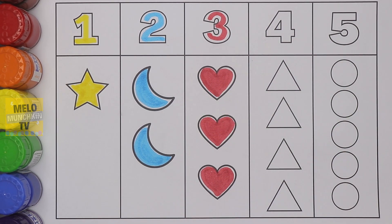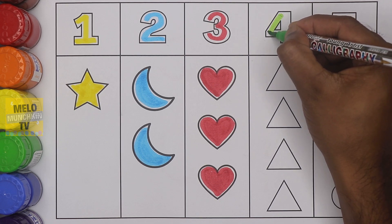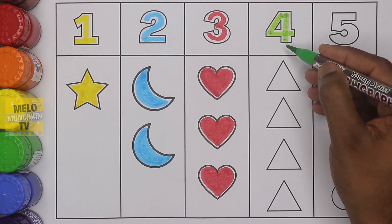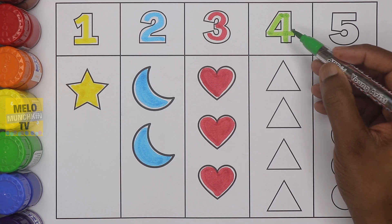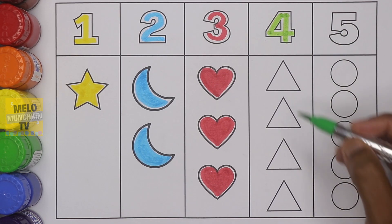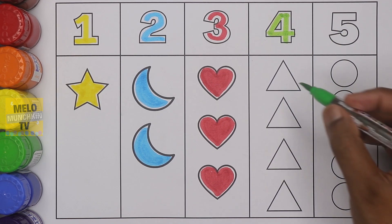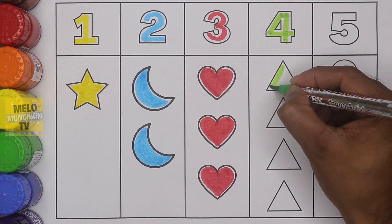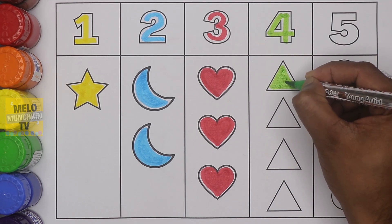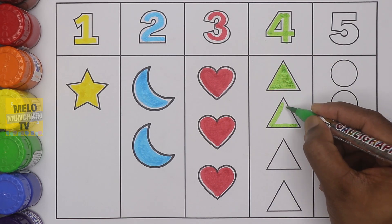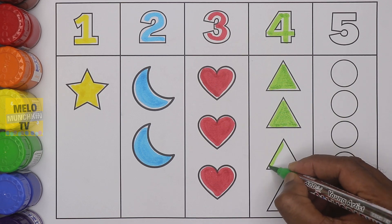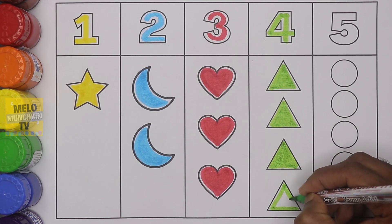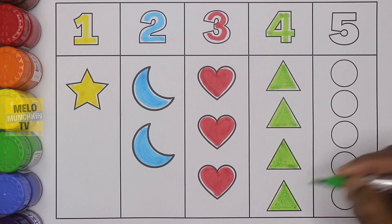Three hearts! Next, I'll take green color and write number four — F O U R, four. And these are four triangles. One, two, three, and four. Let's color these — one, two, three, four. Four triangles!